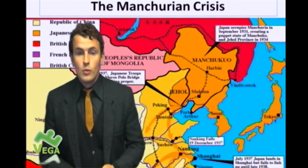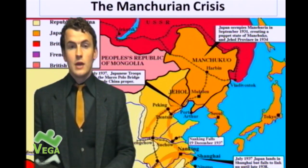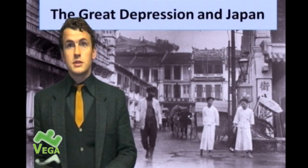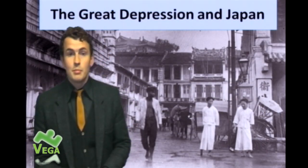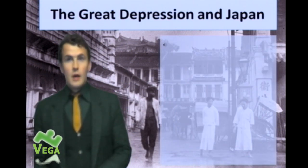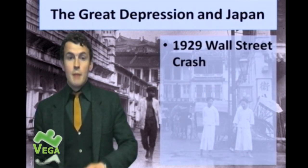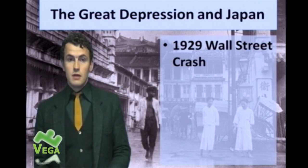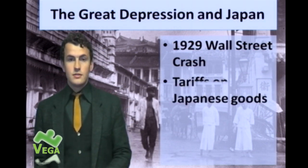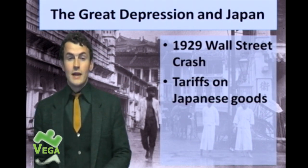The Manchurian crisis is an event which occurred in 1931. In your exam you are likely to be asked a question about the key features of this particular crisis. The Great Depression started in 1929 with the Wall Street crash. As a result of that crash, America, serving their own interests, began to impose heavy tariffs on Japanese goods, which meant that the Japanese economy suffered quite a great deal.